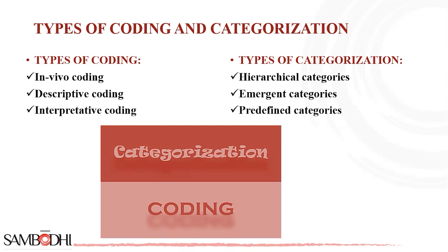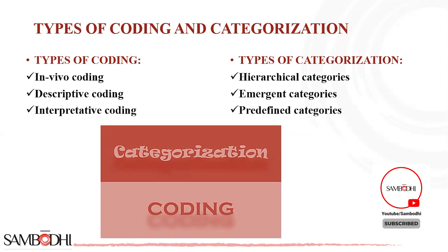Emergent categories are also contextually sensitive, capturing the unique aspects of the data and the participants' experiences. Using emergent categories is particularly beneficial in exploratory or qualitative research with open-ended questions, as it allows researchers to discover unexpected themes and gain a deeper understanding of the research topic. Researchers can complement emergent categories with other coding approaches such as predefined categories or thematic coding to create a more comprehensive and nuanced analysis.